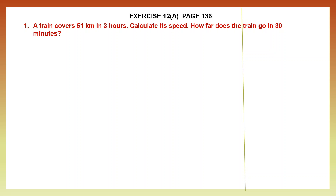Question 1. A train covers 51 kilometers — so whenever you have kilometers, we are talking about distance — in 3 hours, we are talking about time. So a train covers 51 kilometers in 3 hours. Calculate its speed. First, we need to find the speed of the train when it covers a distance of 51 kilometers in 3 hours.